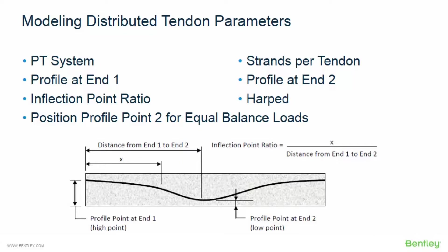You can specify the HARPT parameter, which designates the tendon segment as having a straight profile as opposed to a parabolic profile. You can also enter the half span ratio, which specifies the portion of the half span that this segment represents. The N2 half span ratio must always be greater than the N1 half span ratio. Half span ratios of 0 and 1 represent an entire half span, and it is not recommended that these values be changed. Lastly, you have the option to position profile point 2 for equal or balanced loads, which moves the low point in plan to equilibrate the uplift during analysis.